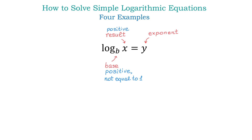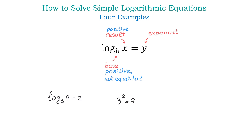An example of a logarithmic equation can be log base 3 of 9 equals 2. In this equation, the base 3 raised to exponent 2 equals the result 9. We can write this logarithmic equation in exponential form, and this will be 3 to the second power equals 9. Here we have a logarithmic equation, and this is the exponential form.